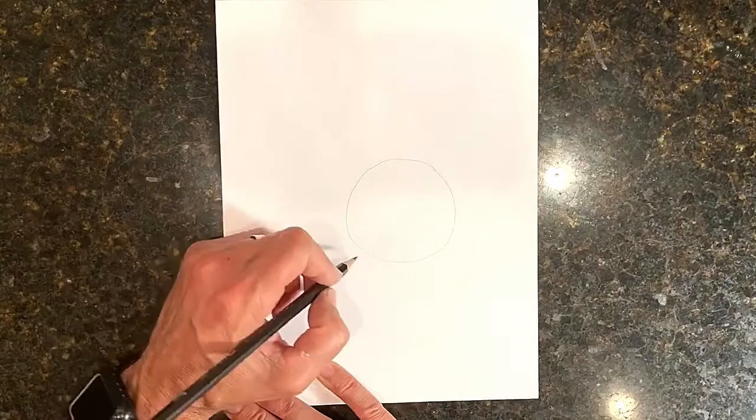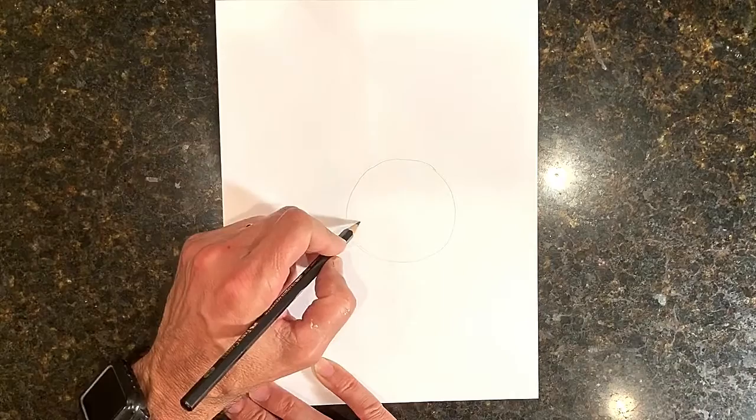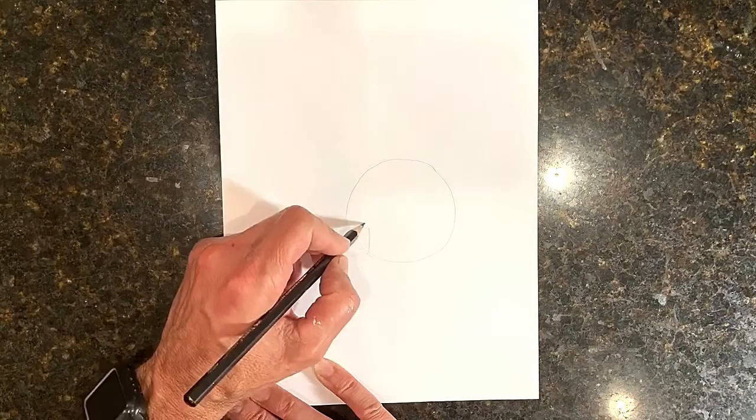Next we're going to draw the head. Make that a kind of rounded square - well, a square without the corners.